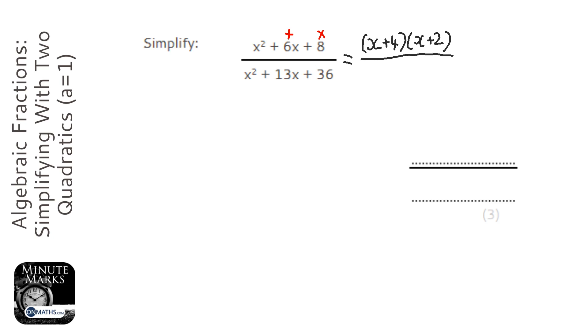And the same from the bottom. Times together to make 36, add together to make 13. And it's going to be an x at the start of both of those. So, 36 would be 3 and 12 won't work. 4 and 9, does 4 and 9 work? Yep, 4 and 9 works.